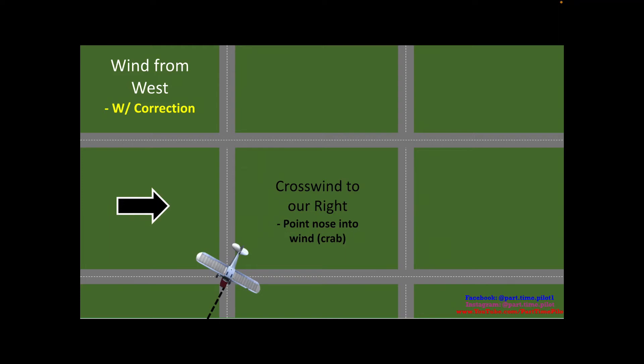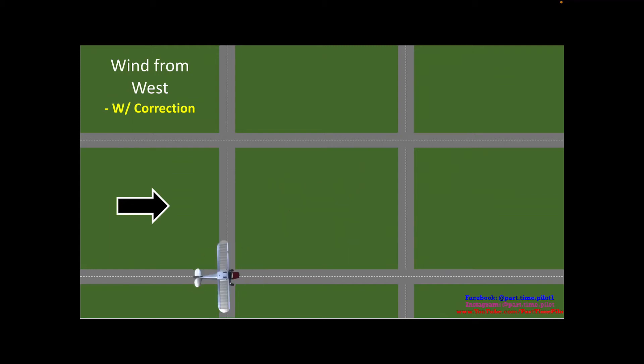By turning less than 90 degrees our nose is pointed — or crabbed — slightly into the wind. This counteracts the wind pushing us to the east and maintains our course right over the road. From a headwind to a crosswind, turn less than 90 degrees so the nose is crabbed into the wind. Now when we turn into our tailwind, we're going to turn greater than 90 degrees to get our nose onto the road. Since it's a tailwind it won't push us left or right, so we want our nose directly along the road. We travel straight down that leg with no correction needed.